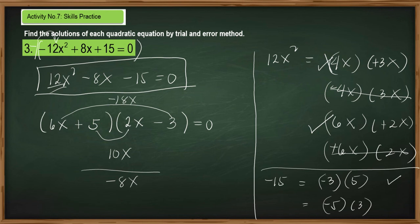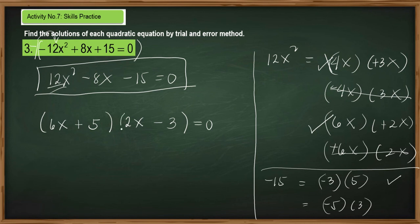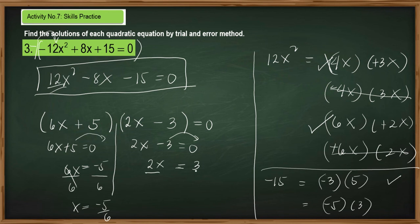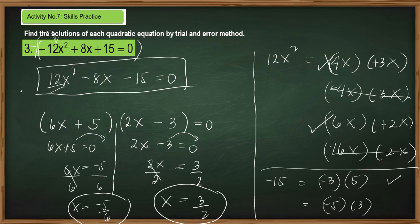Sometimes the process is a bit long when you don't immediately find the right factors, but once you get used to trial and error, it becomes easy. These are the correct factors of 12x squared minus 8x minus 15. Applying the zero product property: transpose to get 6x equals negative 5, divide both sides by 6, so x equals negative 5 over 6. For the other factor, transpose negative 3 to get positive 3; divide both sides by 2, so x equals 3 halves. These are the solutions of this quadratic equation.